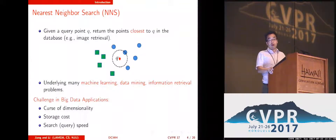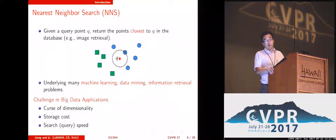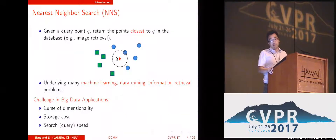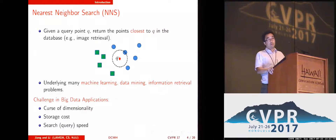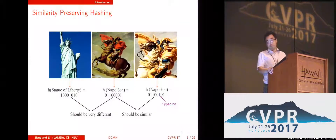Nearest neighbor search tries to find the points closest to a query point in the database. For example, we can perform image retrieval. When we apply nearest neighbor search in big data, it meets several challenges such as the curse of dimensionality, storage cost challenge, and query speed challenge. Hashing is proposed to solve these problems.